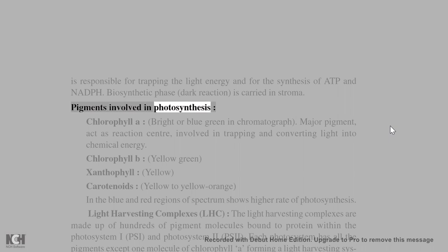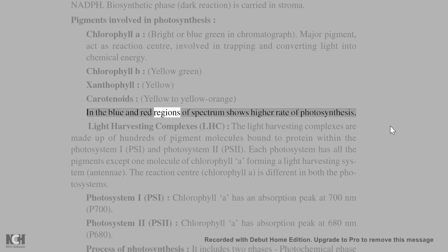Pigments involved in photosynthesis: Chlorophyll A - bright or blue-green in chromatograph, major pigment, acts as reaction center, involved in trapping and converting light into chemical energy. Chlorophyll B - yellow-green. Xanthophyll - yellow. Carotenoids - yellow to yellow-orange. In the blue and red regions of spectrum shows higher rate of photosynthesis.